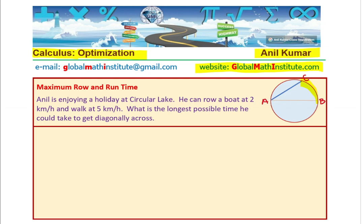Feel free to pause the video and answer it. So let's write down the information given to us. The velocity for boating is given as 2 kilometers per hour. And velocity for walking is 5 kilometers per hour.